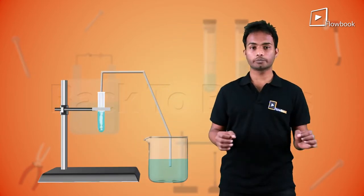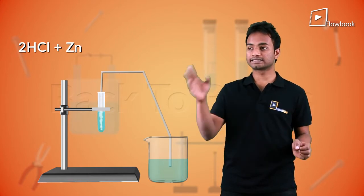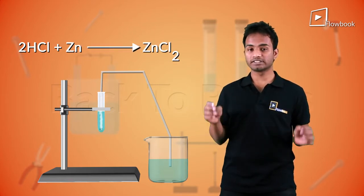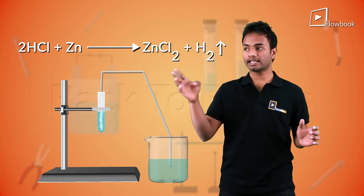Our reaction in this case would be 2HCl plus zinc gives ZnCl2, which is zinc chloride, plus H2 gas.